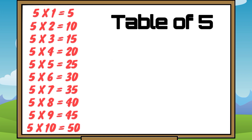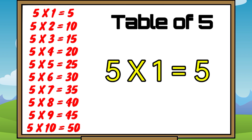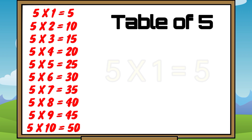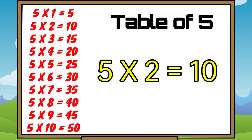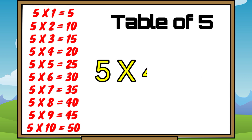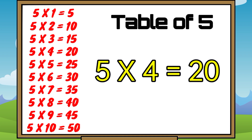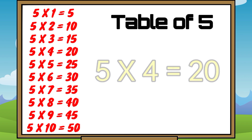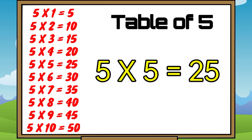Now Table of 5. 5 ones are 5. 5 twos are 10. 5 threes are 15. 5 fours are 20. 5 fives are 25.